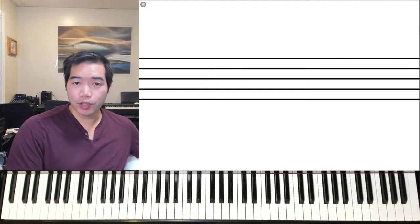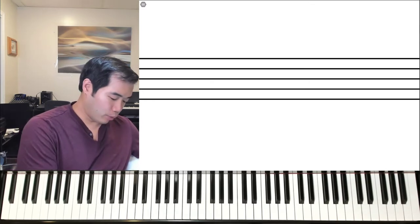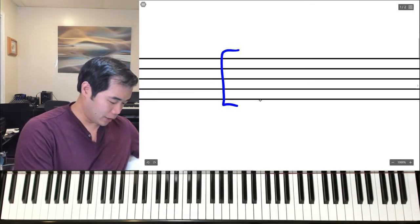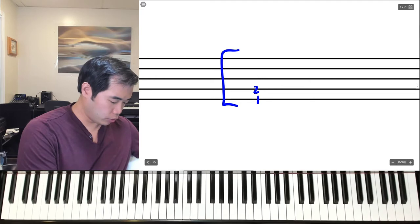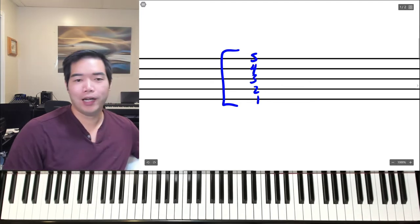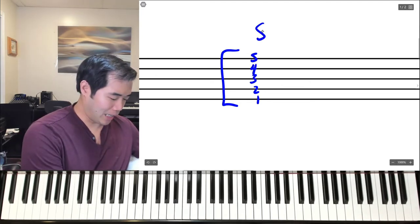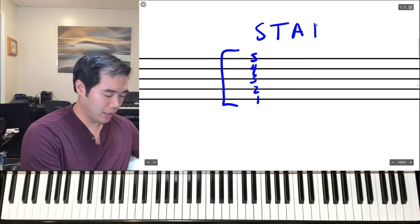So a music staff is what music is written on. It's comprised of five lines. Here you can see we have one, two, three, four, five lines that comprise the staff, spelled S-T-A-F-F.